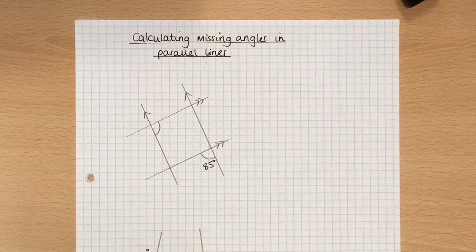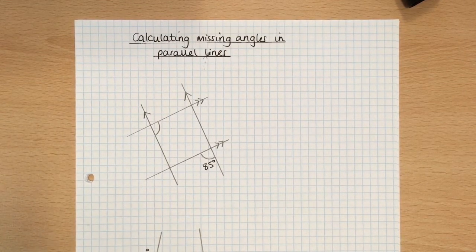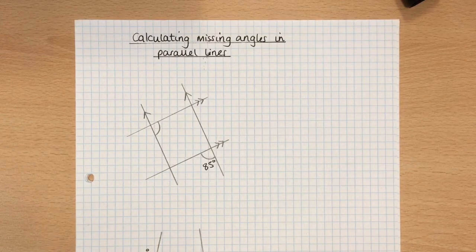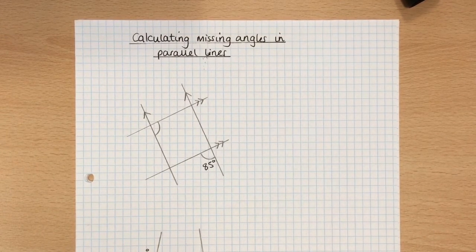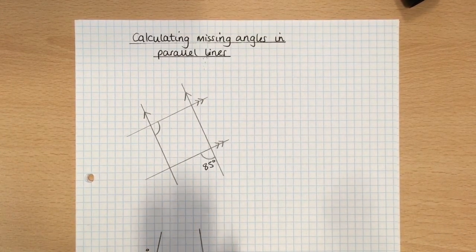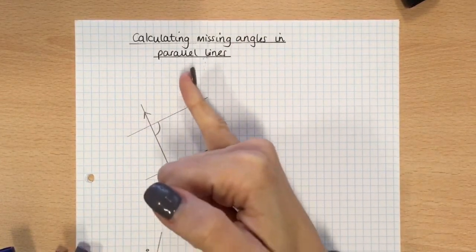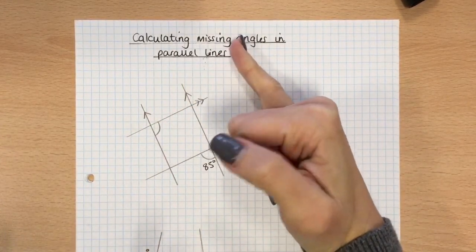Okay, so they're going to be slightly more complicated, the shapes that we're looking at, and it might involve one set of parallel lines, it might involve two, and it could be that there are more than one pair of parallel lines, so there could be three parallel lines in a row.